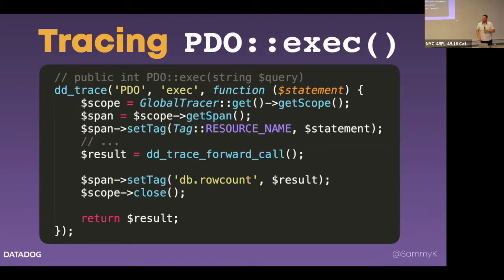Question about the opcode handler — it's going to invoke your anonymous function here. And then before it calls the original PDO exec function, what if PDO exec throws an exception? Is there more here that you just took out? Yeah, there's a lot going on in this — this is the very, very truncated version.